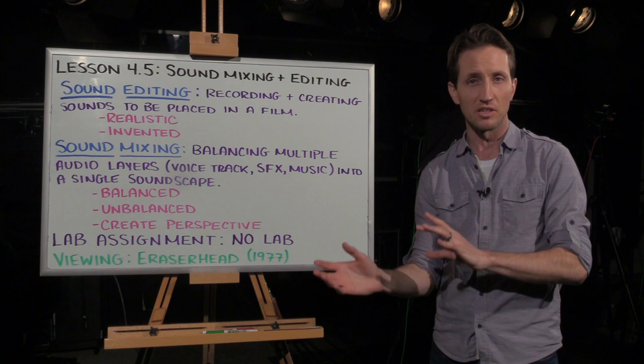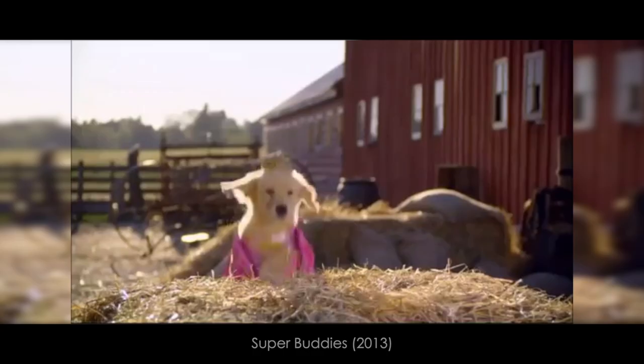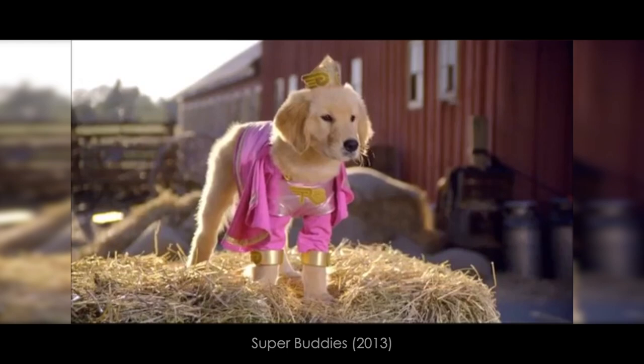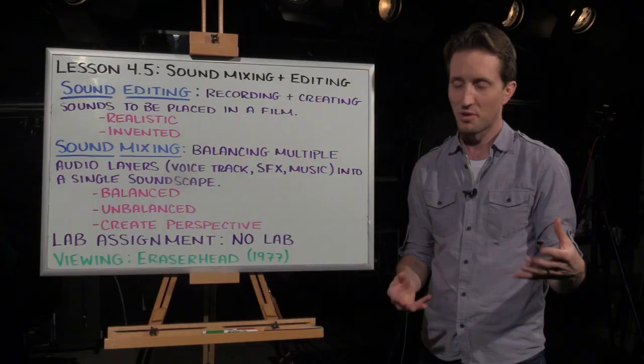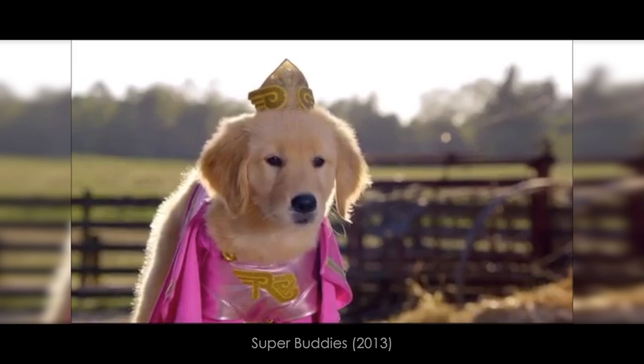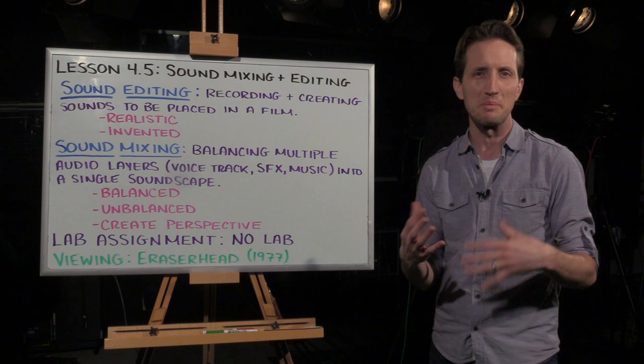Your sound mix can be balanced, like we see in this example from Super Buddies starring Zendaya. The dog jumps up on the hay bale — we hear that sound effect. There's nice music playing in the background, and of course the dialogue between the dog and the two horses. Notice in this example there's not one particular sound dominating over the others. It's all pretty balanced: the dialogue, the music, and even the sound effects.